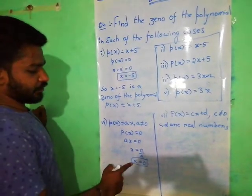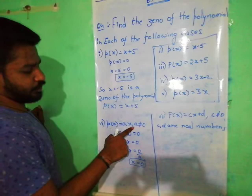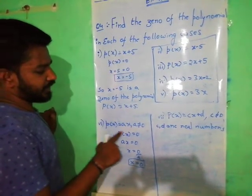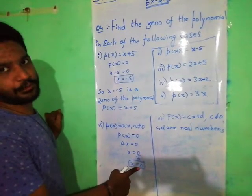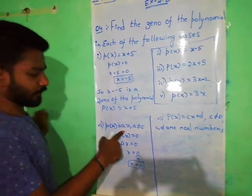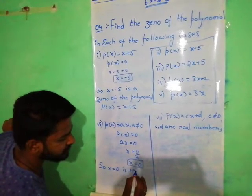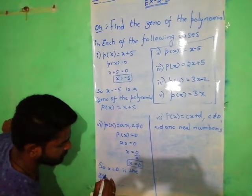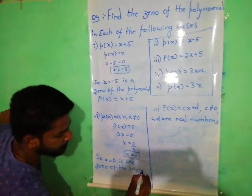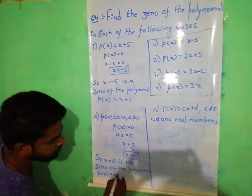We check: if we put x is equal to 0, A into 0 gives 0. The total polynomial value becomes 0 at x is equal to 0. So x is equal to 0 is the zero of the polynomial P of x is equal to Ax.